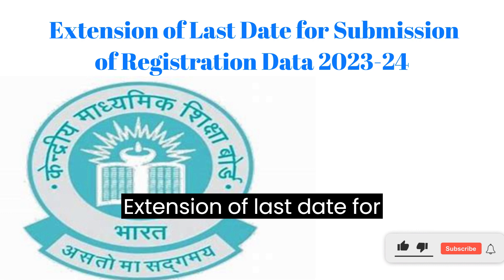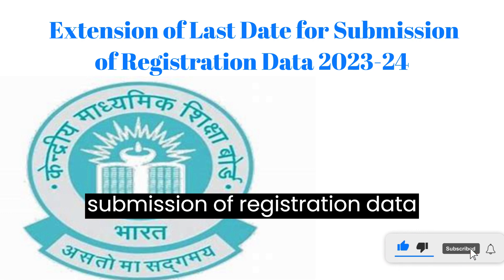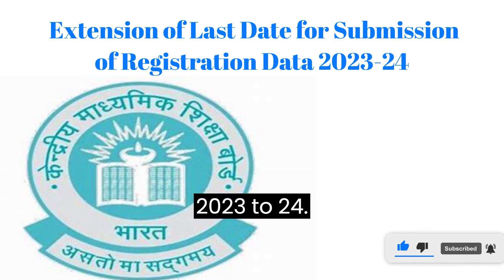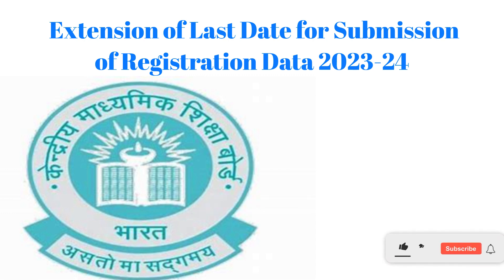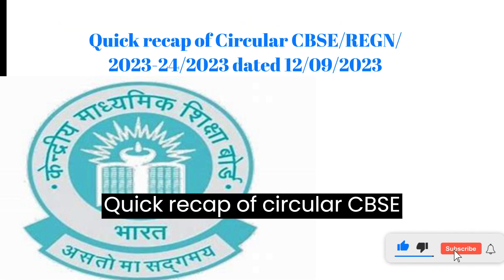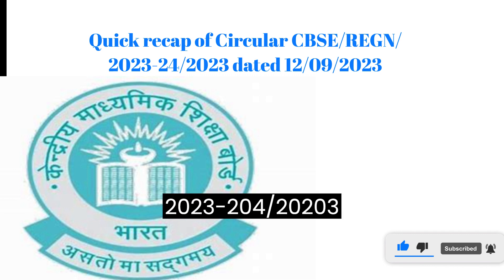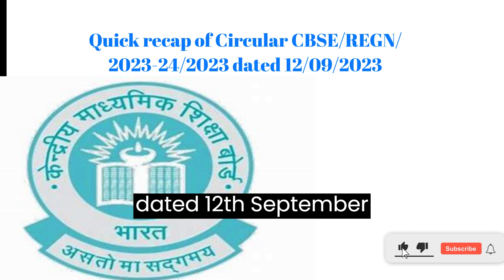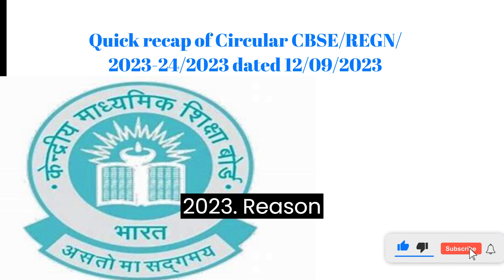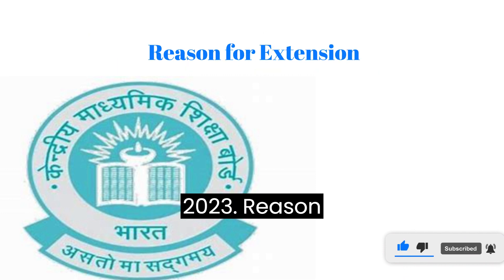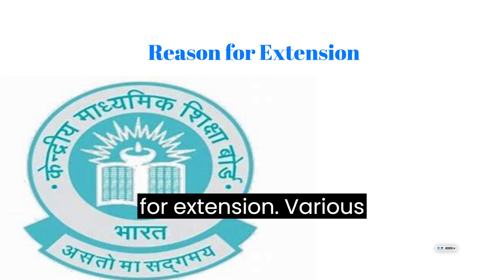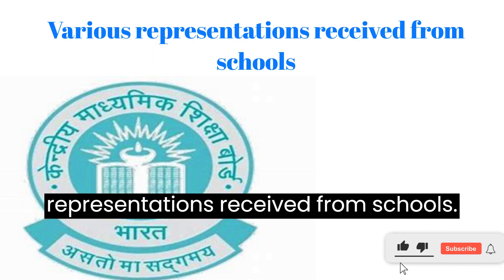Extension of last date for submission of registration data 2023-24. Quick recap of Circular CBSE REGN 2023-24-2023 dated 12 September 2023. Reason for extension: various representations received from schools.